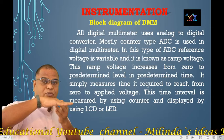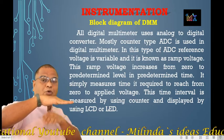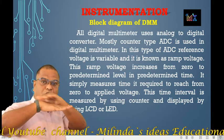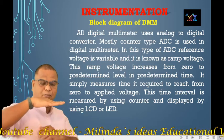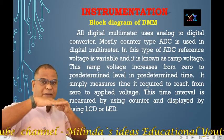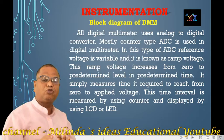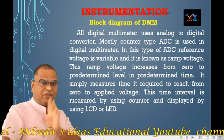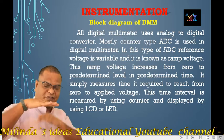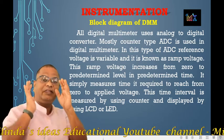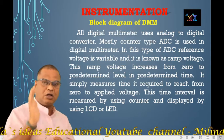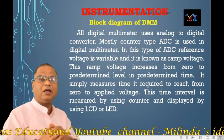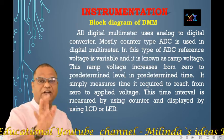The A to D converter compares the potential developed to a reference potential. The reference potential is constant. The time is counter-measured. The pulses generated by the A to D converter are counted using the counter.